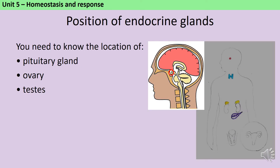There are three endocrine glands without which it wouldn't be possible for humans to reproduce. You need to know the location of each of these. The pituitary gland is found in the brain, just behind the bridge of the nose. The ovaries sit in the lower abdomen on either side of the uterus, also known as the womb, and connected up to it by the oviducts or fallopian tubes. The testes sit in the scrotum outside of the body, below the penis.